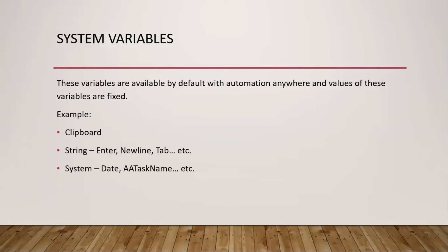Next is system variables. System variables are default variables provided by Automation Anywhere itself, and their values are fixed. For example, clipboard - whatever we copy becomes the value of clipboard. String variables also exist here, though strings are in user-defined variables as well.